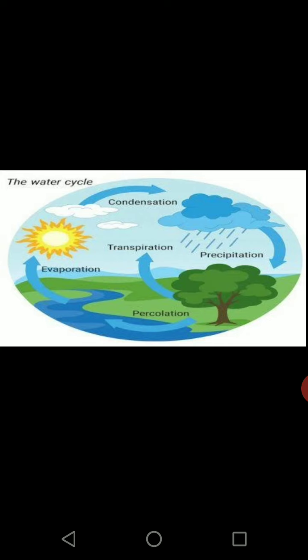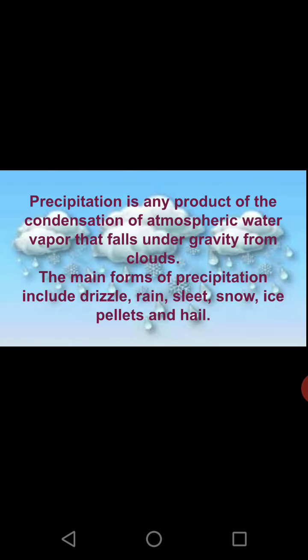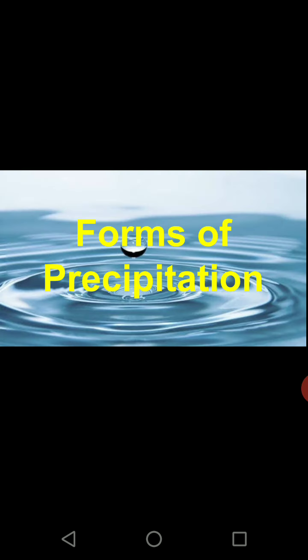Precipitation is not of a single form. To define precipitation: it is the product of the condensation of atmospheric water vapor that falls under gravity from clouds. It can come in the form of drizzle, rain, sleet — like small tiny ice pieces — snowfall, ice pellets, and hailstorms. Let us see each form one by one.